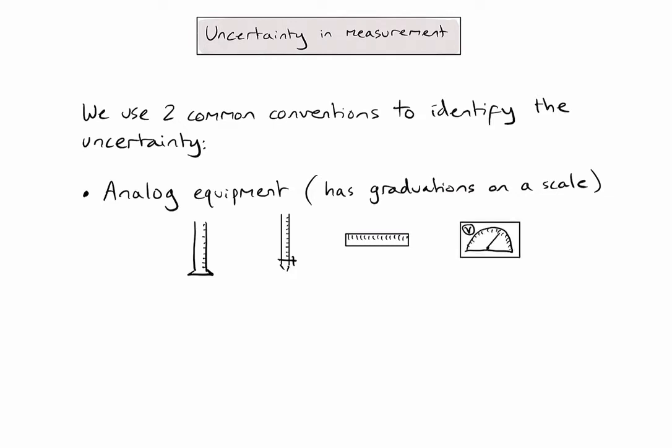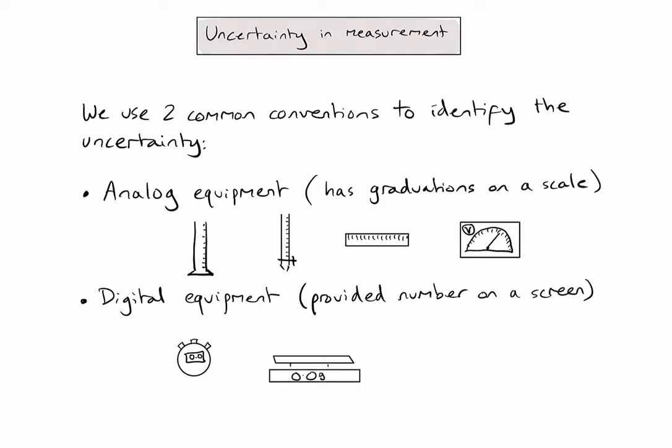The second type of equipment we might use to make measurements is digital equipment. And on this type of equipment, we'll be given a number on a digital screen. Examples might include a stopwatch, a balance or a digital voltmetre.